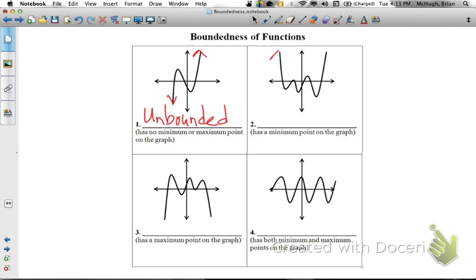Now the second example you can see if we draw the arrows at the ends of the graph, both of these go upward. There is something like a boundary line. We could draw it in here, a line where this graph never actually passes below this point.